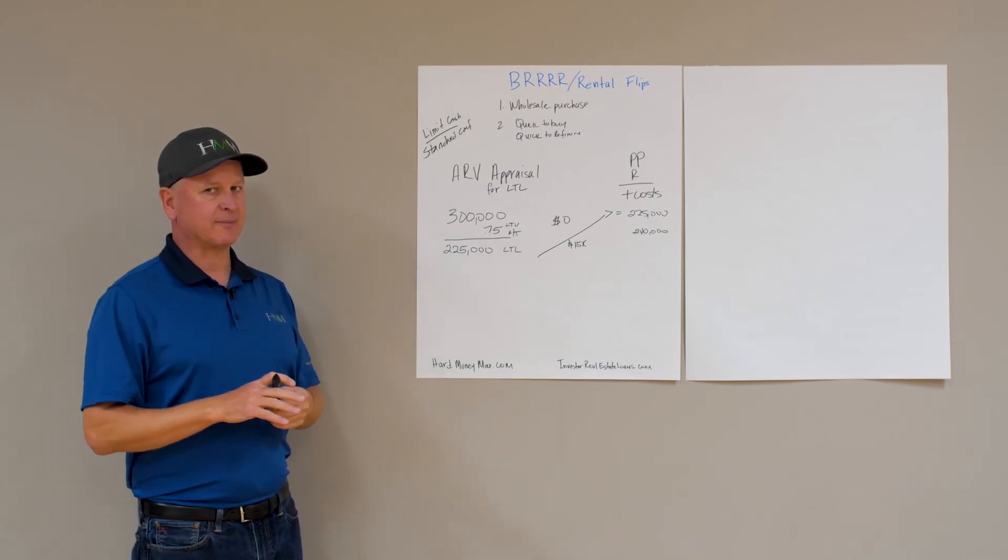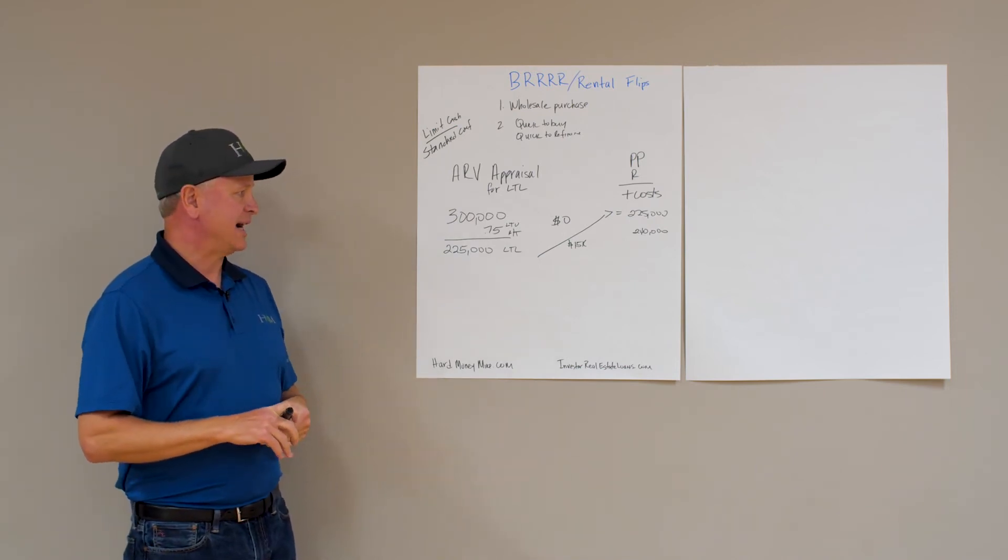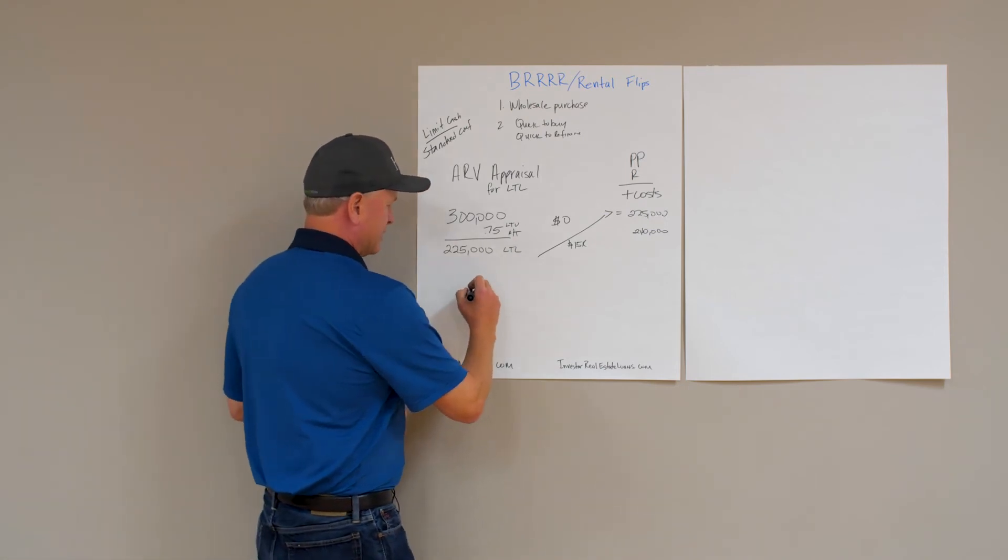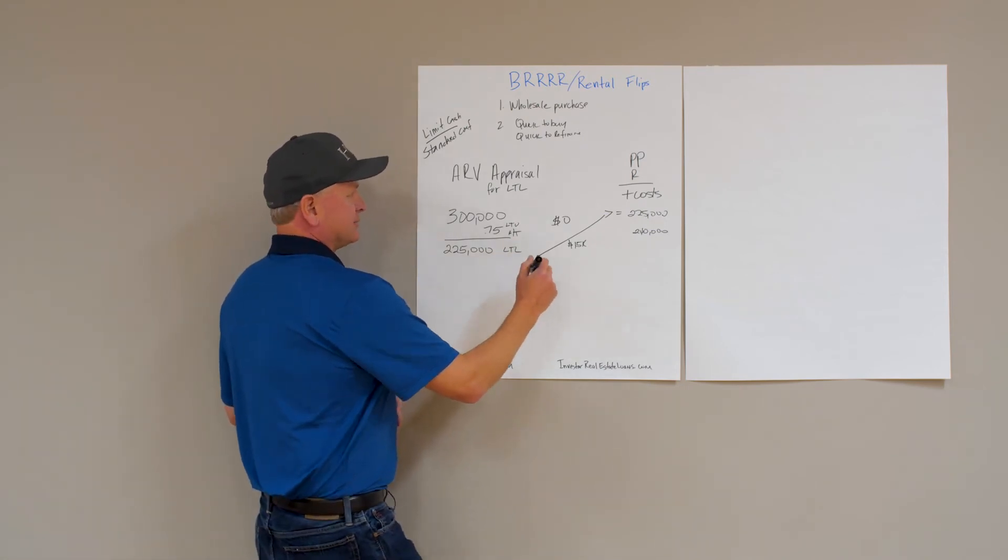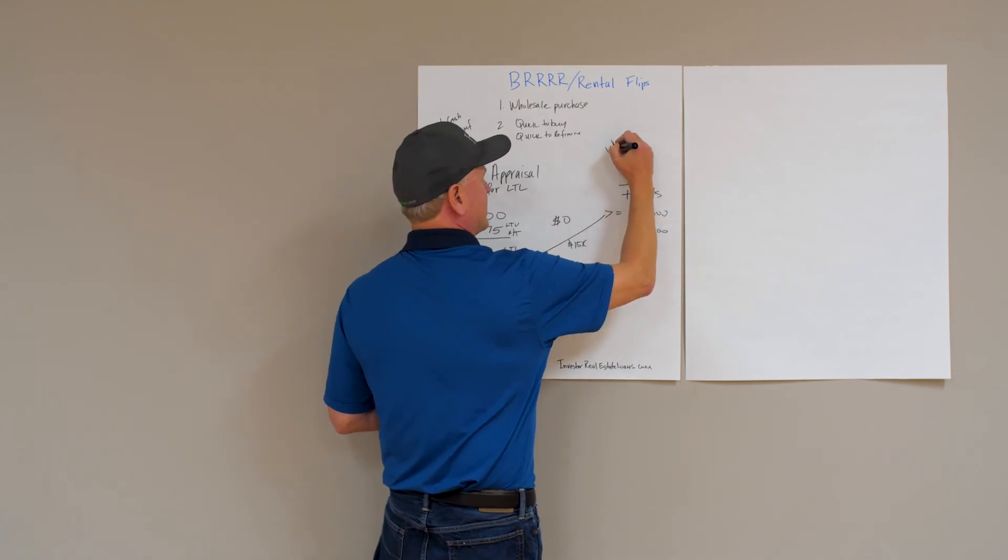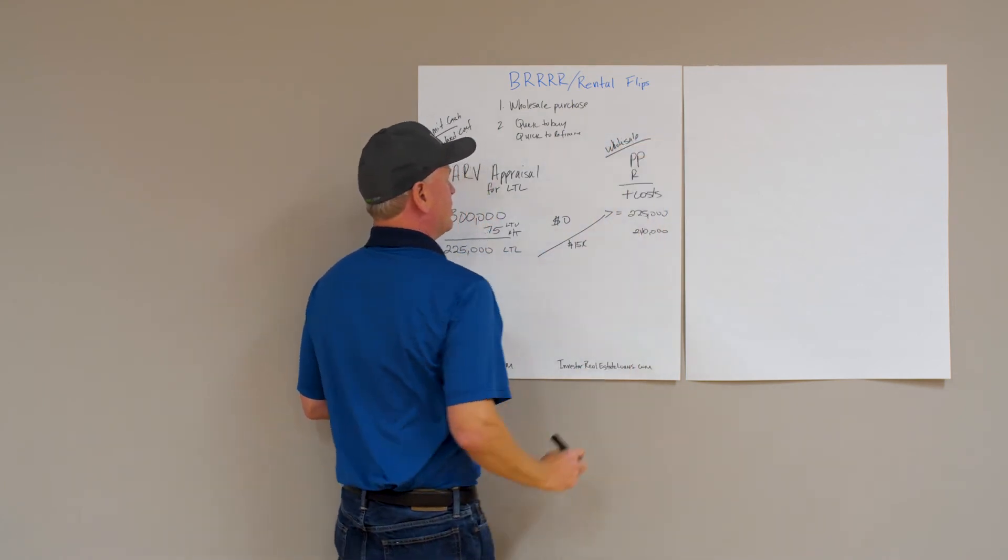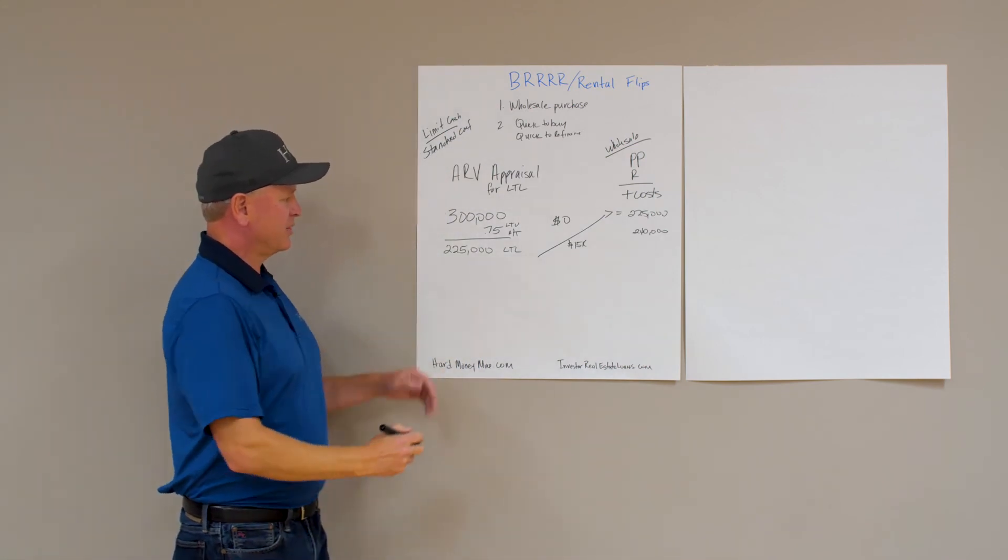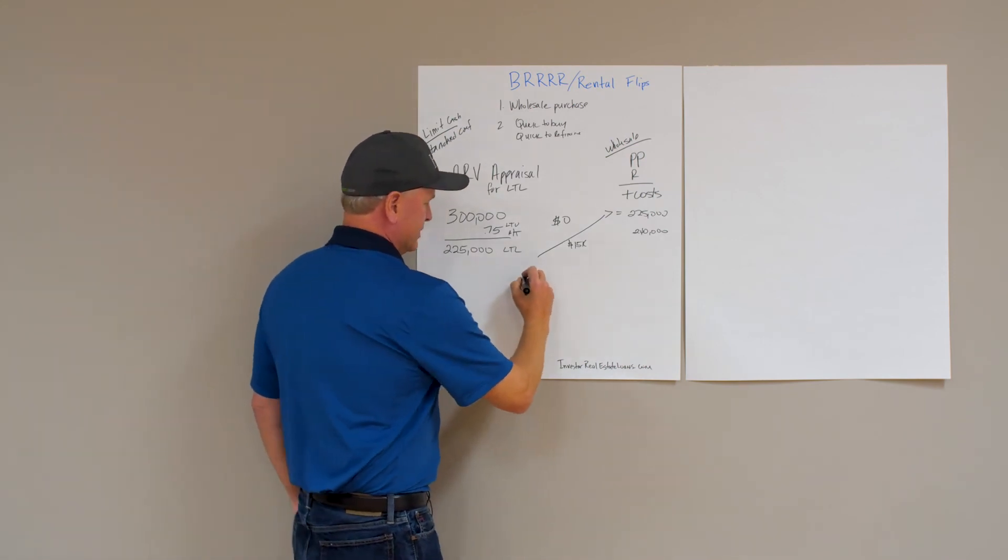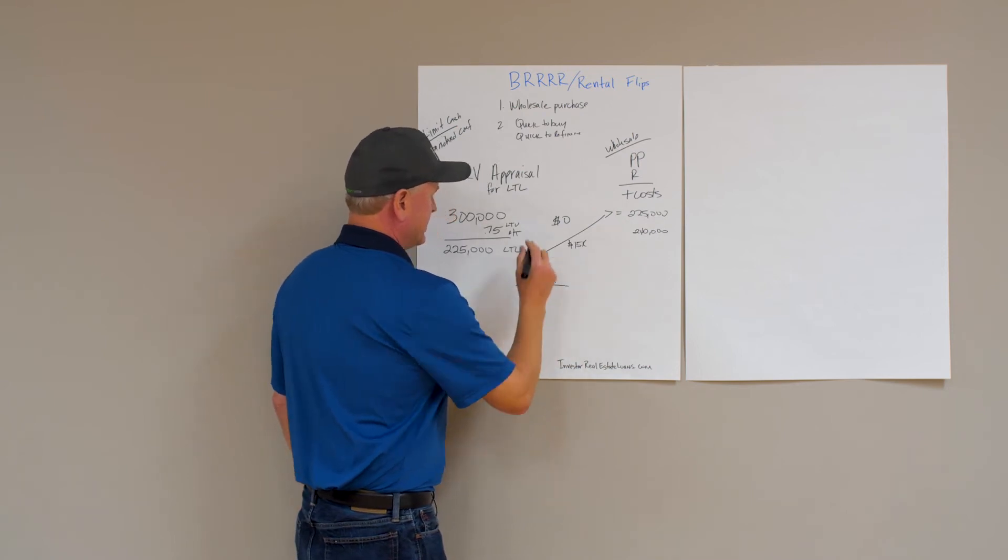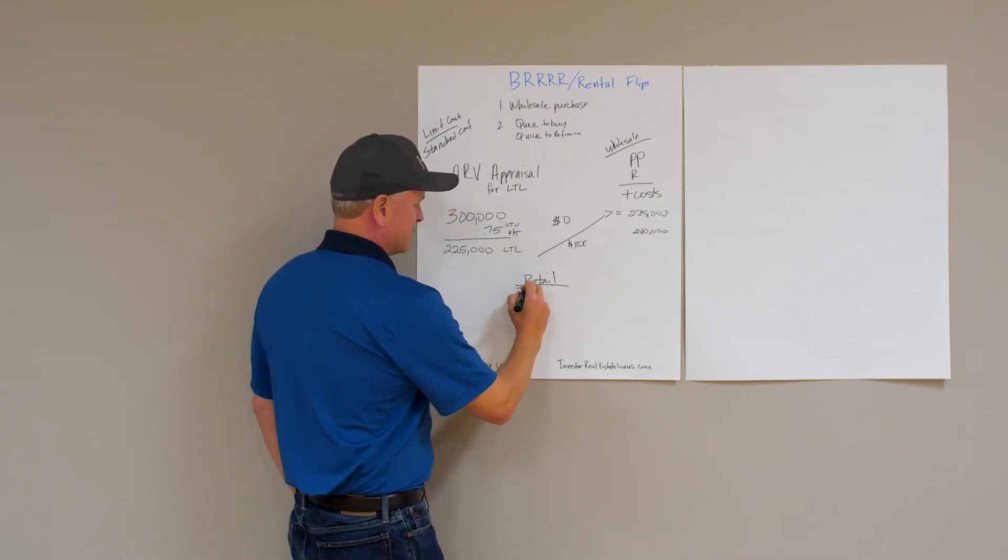Let's look at an example to contrast this. What happens if you're buying a property at retail? This, of course, is buying at wholesale. But what if we contrast this with buying something at retail? Let's say we still have that property worth $300,000.